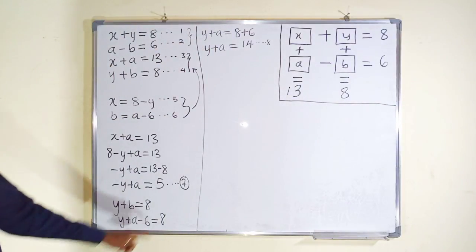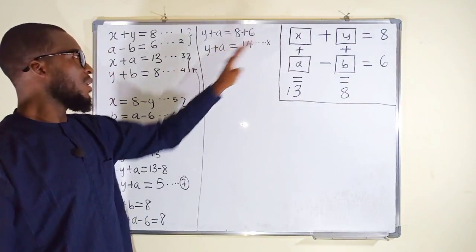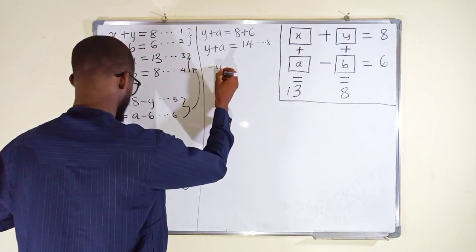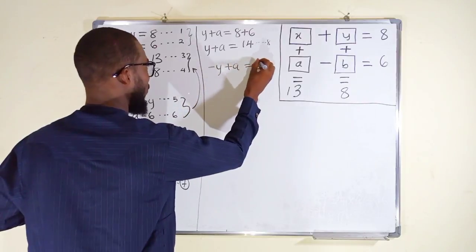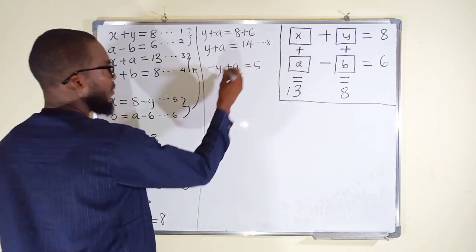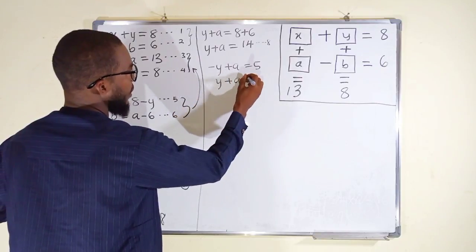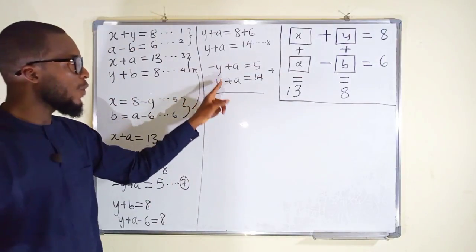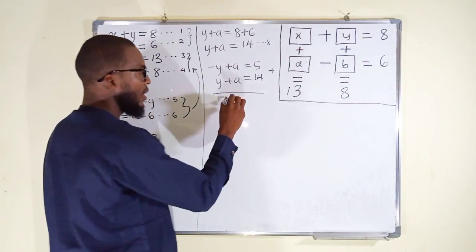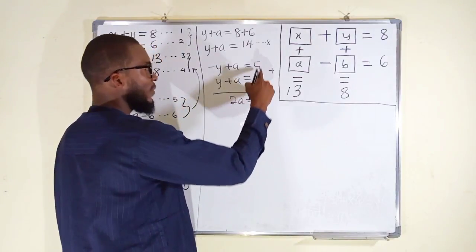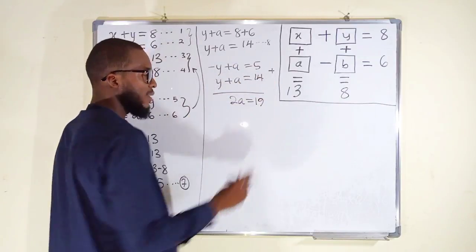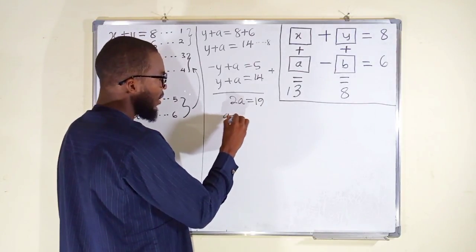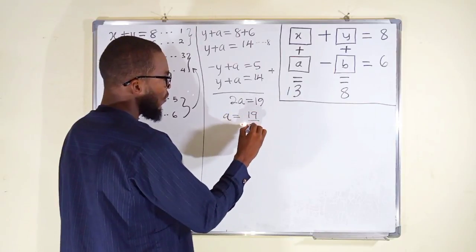Now we can solve equation 7 and equation 8 by the elimination method. Equation 7 is negative y plus a equals 5, and equation 8 is y plus a equals 14. Adding them together, negative y plus y is 0, and a plus a is 2a, and on the right we have 5 plus 14 which equals 19. Dividing both sides by 2, a equals 19 over 2.